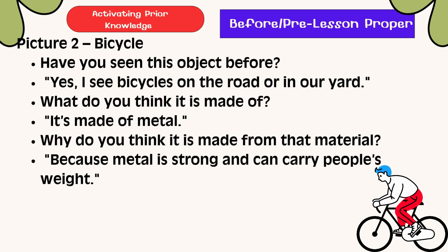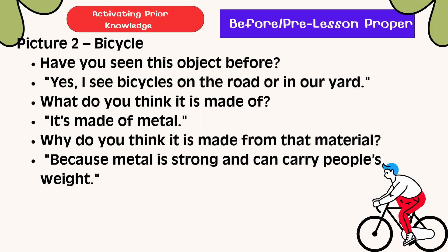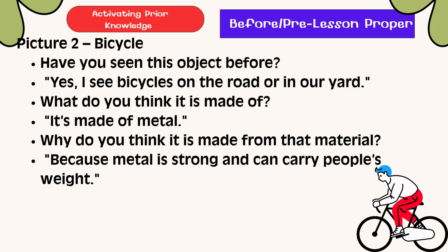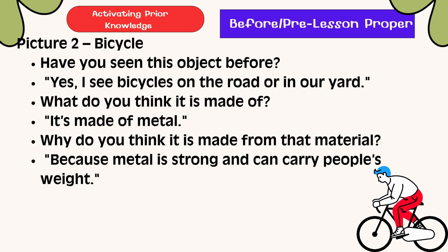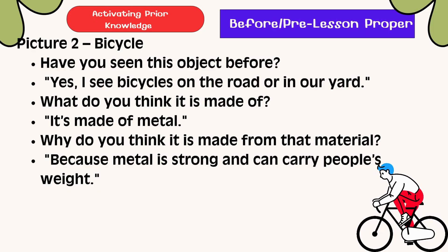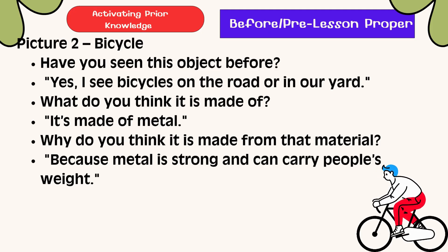Picture 2: Bicycle. Have you seen this object before? Yes, I see bicycles on the road or in our yard. What do you think it is made of? It's made of metal. Why do you think it is made from that material? Because metal is strong and can carry people's weight.